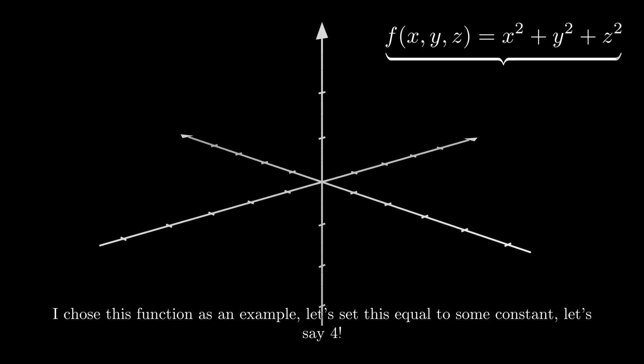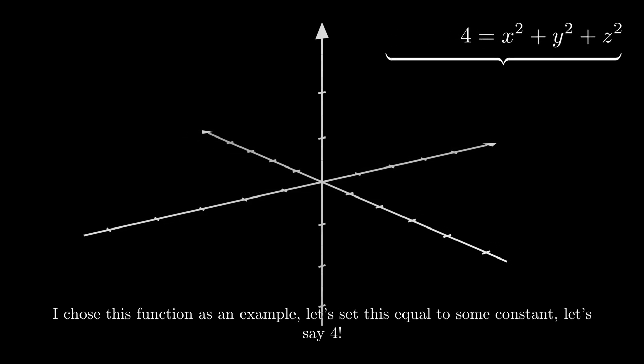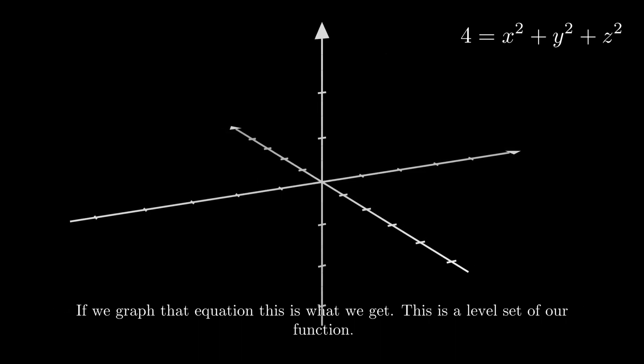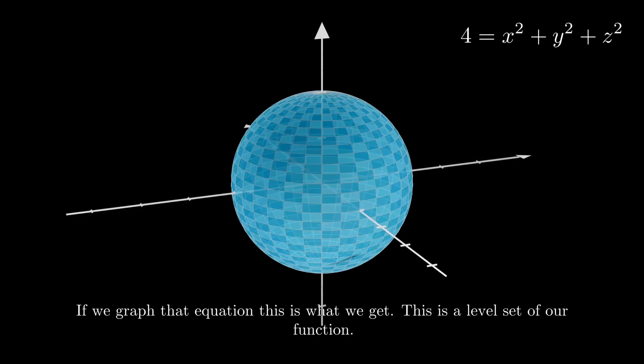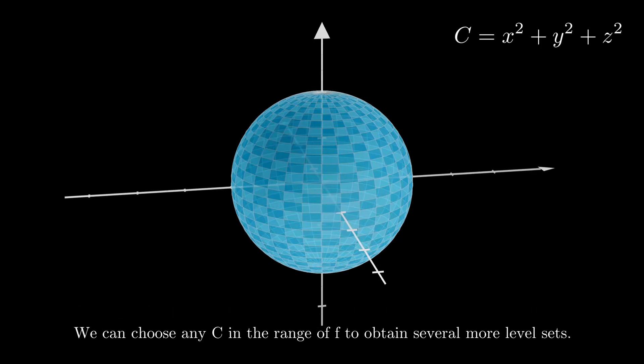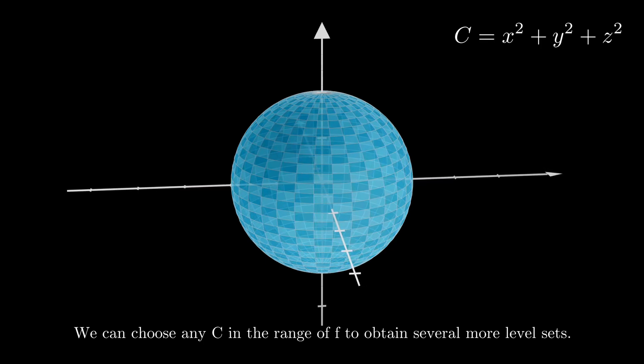I chose this function as an example. Let's set this equal to some constant, let's say four. If we graph this equation, this is what we get. This is a level set of our function. We can choose any constant in the range of f to obtain several more level sets.